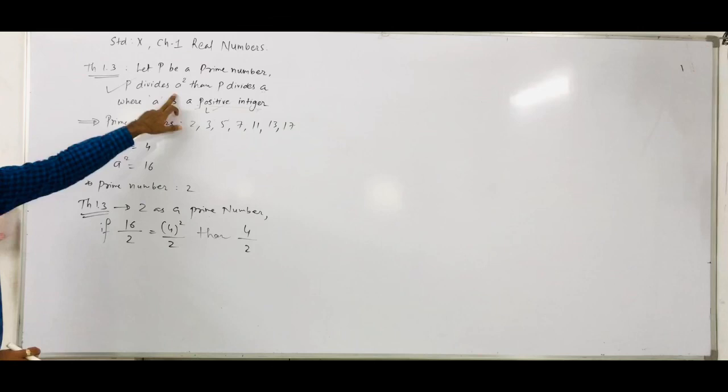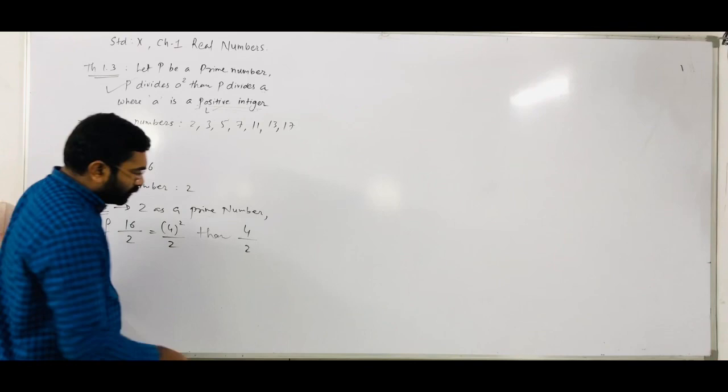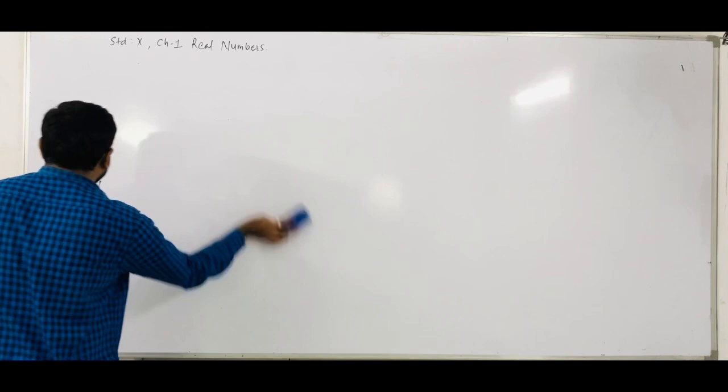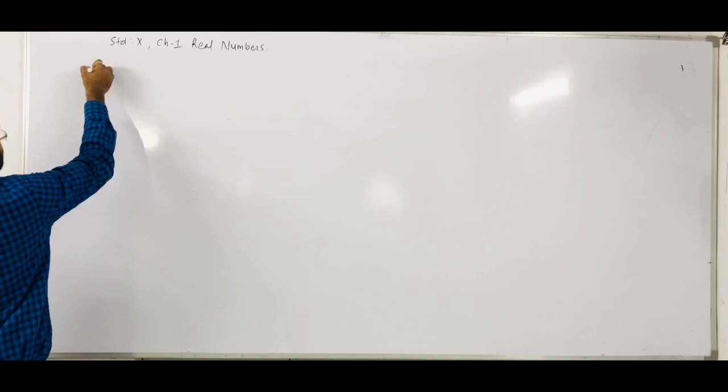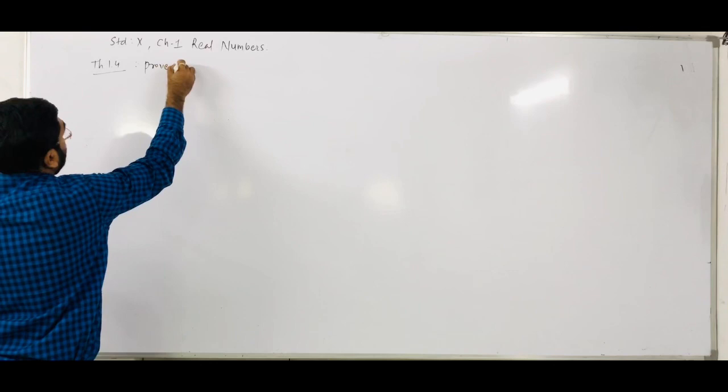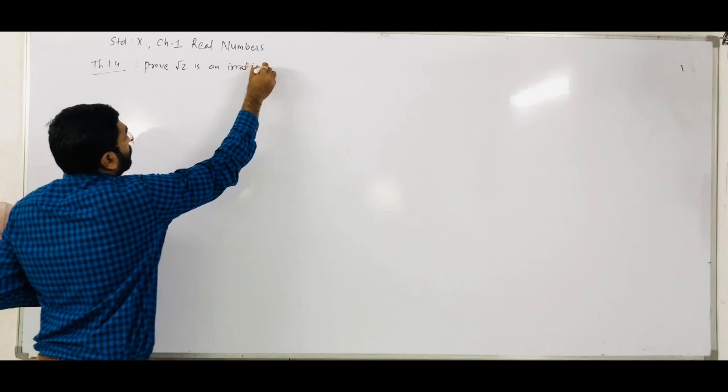Now, based on that, we have to prove the irrationality of numbers. So here, Theorem 1.4 is given: prove that root 2 is an irrational number.